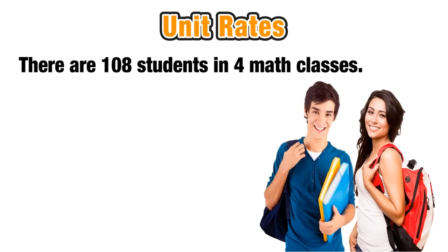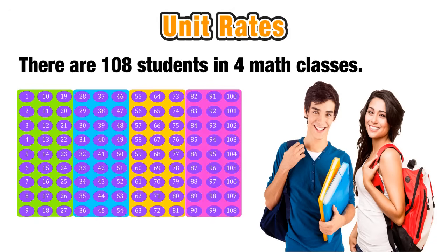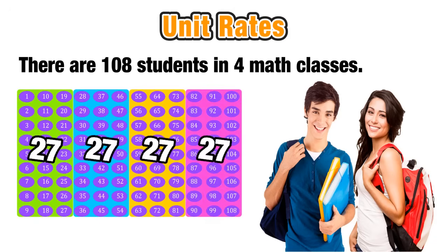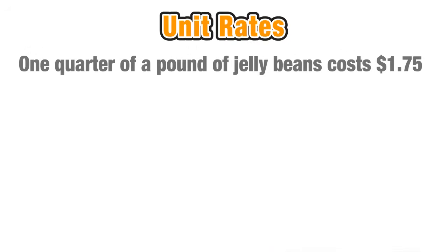Now we'll look at a scenario where there are 108 students in four math classes. We can visualize this population of 108 students and figure out the average number of students per class by dividing the group into four classes. Since 108 divided by 4 equals 27, we have four groups of 27, so our unit rate is an average of 27 students per class.